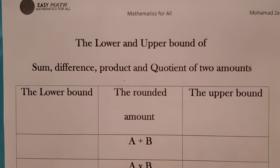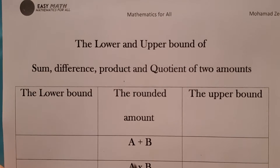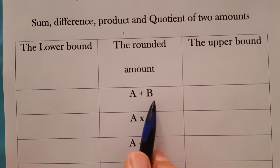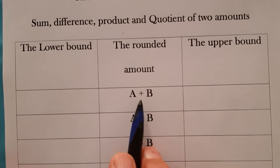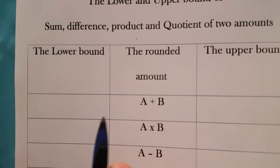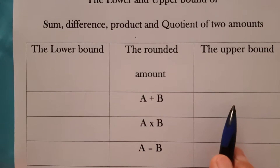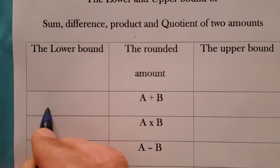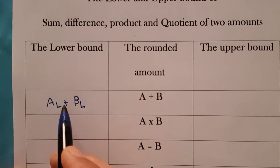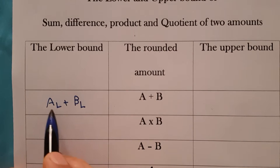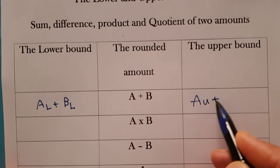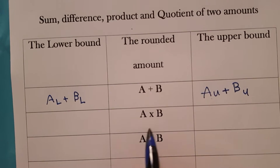Let's continue to the lower bound and upper bound of a sum, difference, product, and quotient of two amounts. Consider adding two amounts A and B, each rounded. The lower bound of the sum is A_lower plus B_lower — to get the minimum, minimize each. The upper bound is A_upper plus B_upper. For the product, to maximize A times B, take A_upper times B_upper; to minimize, take A_lower times B_lower.